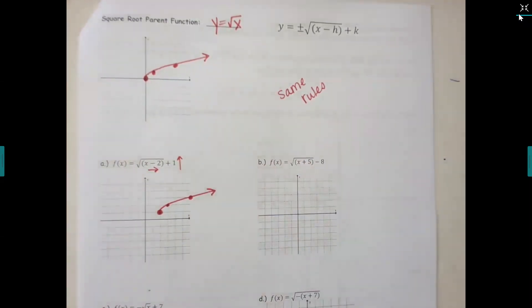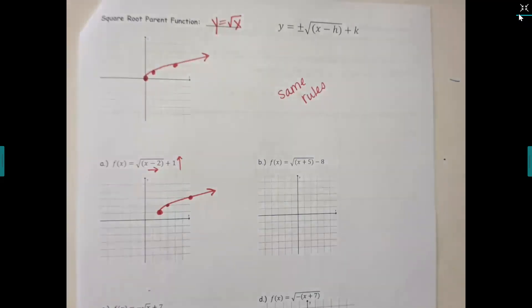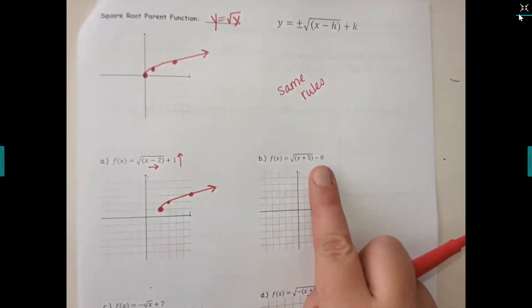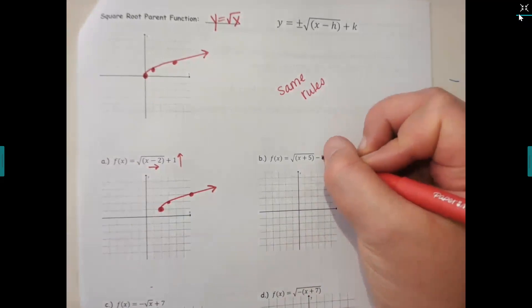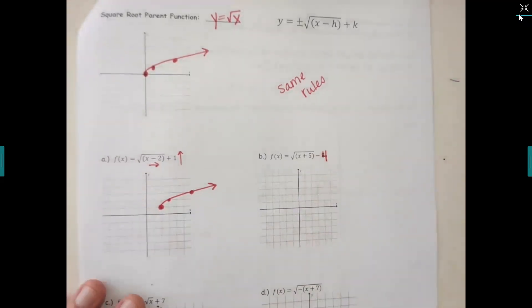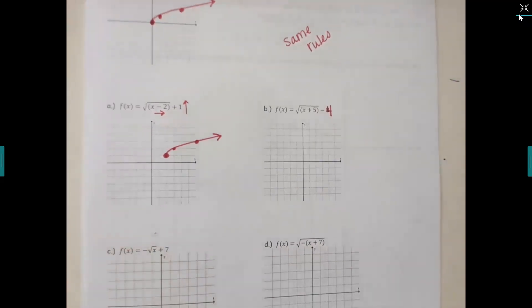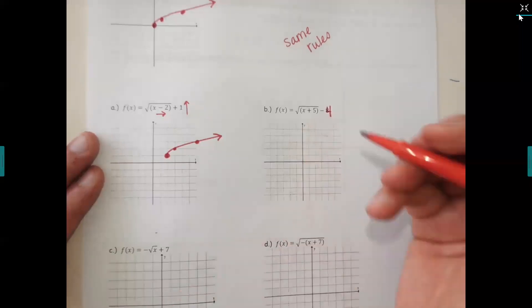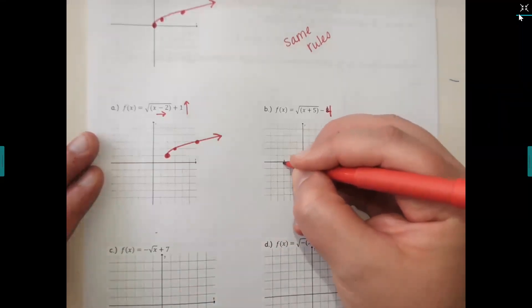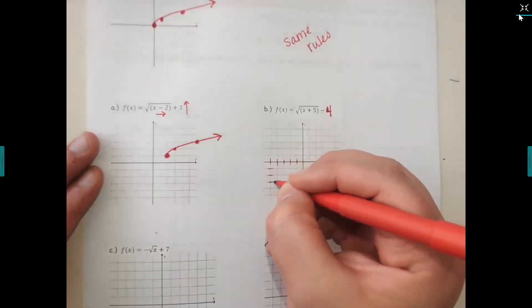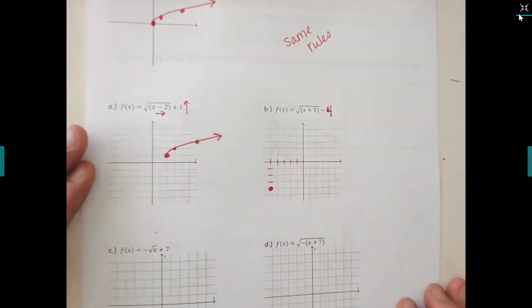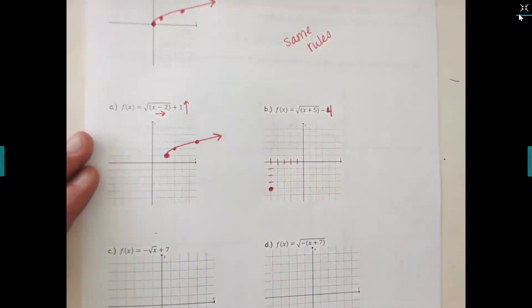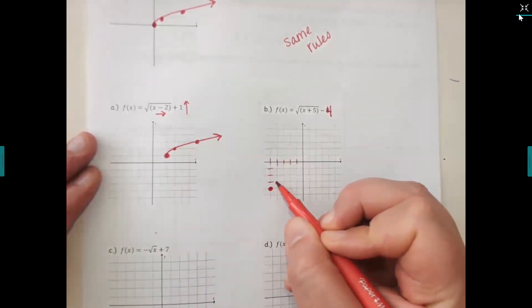They should have the exact same shape — you're just moving it around. For example b, let's change the eight to a four so it fits on the grid. I have a plus five inside the root — which way are we going? To the left. What about the minus four? Down. So go to the left five — one, two, three, four, five — then down four.